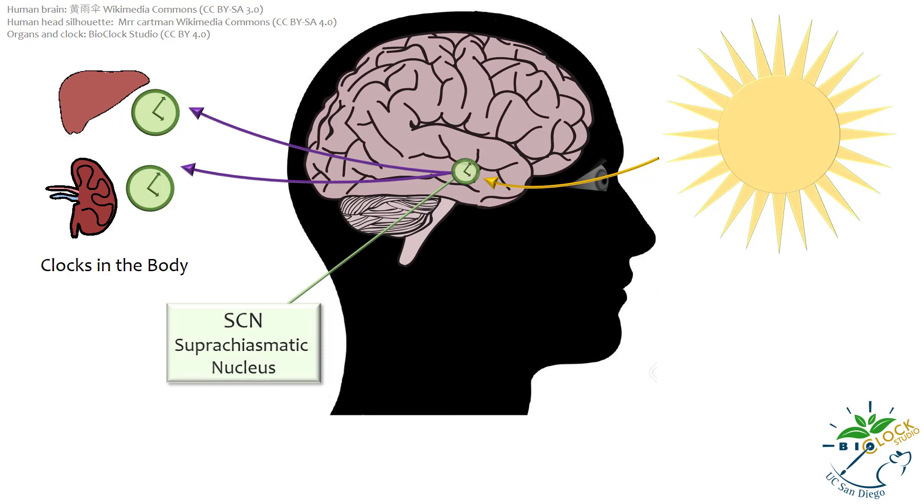The suprachiasmatic nucleus or SCN in the hypothalamus functions as a central pacemaker in mammals. The SCN can generate stable circadian rhythms by itself, as well as synchronize its rhythm to the light-dark cycle of the environment and control the circadian rhythms of the rest of the body.